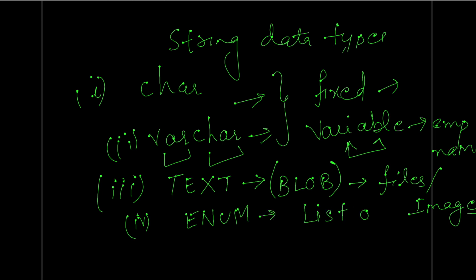We also have ENUM, which stands for enumeration — a list of objects. If you want to store a list of objects, you specify the data type as ENUM. For example, if you are running a small business and want to store a list of products, you can use ENUM. So these were the data types used in MySQL: numeric, date and time, and string.